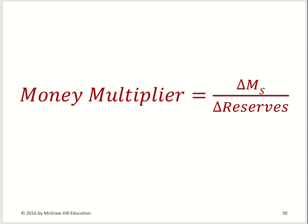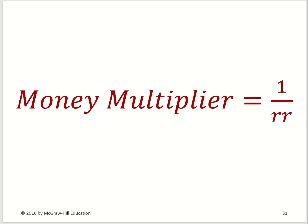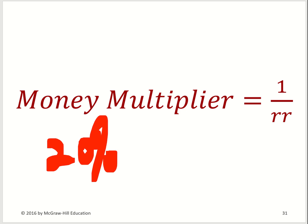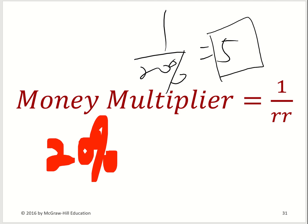The money multiplier formula is: money multiplier equals change in money supply divided by change in reserve, which simplifies to 1 divided by the required reserve ratio. For our previous example, with a required reserve ratio of 20%, the money multiplier is 1 divided by 20%, which equals 5. That means for every $1 of additional money lent out, you can potentially create $5 more in the economy.